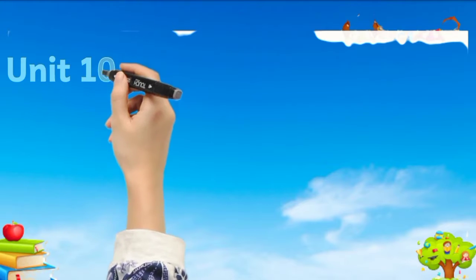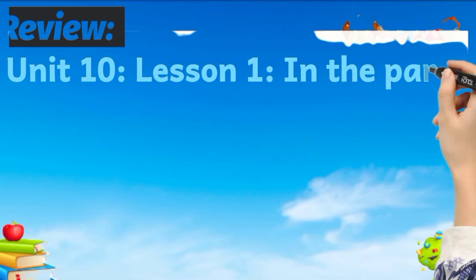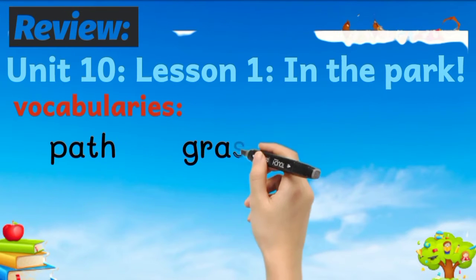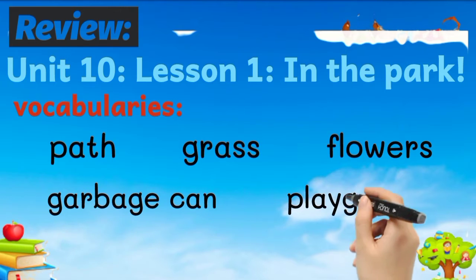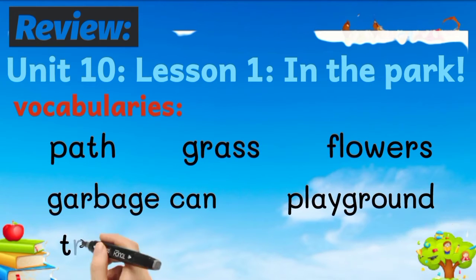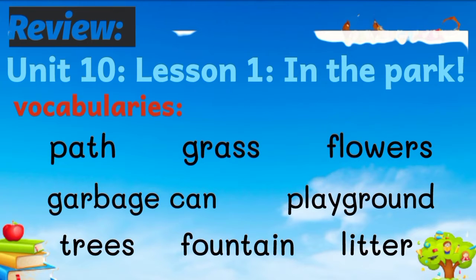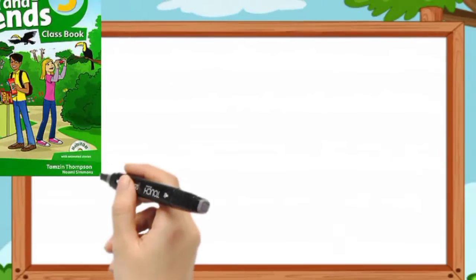Let's review first — Unit 10, Lesson 1: In the Park. Vocabularies: path, grass, flowers, garbage can, playground, trees, fountain, litter. Those are the words that we learned last week.